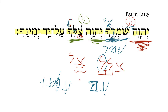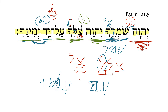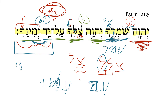The Lord is your shade upon the hand of your right side. The reason I translated it that way is because we have a construct package here, so we have literally 'upon the hand of your right side.' Remember that in a construct package when the final noun is definite — and this one is definite because of the pronominal suffix — then the whole package is definite. So 'the hand of your right side' means your right hand: the Lord is your shade upon your right hand.